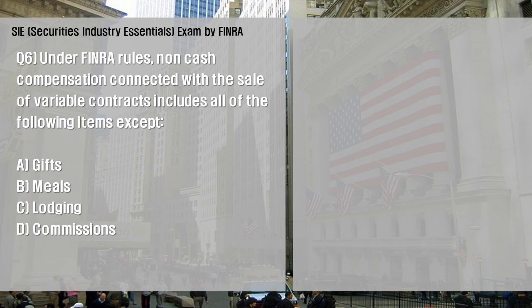Under FINRA rules, non-cash compensation connected with the sale of variable contracts includes all of the following items except: A: Gifts; B: Meals; C: Lodging; D: Commissions.